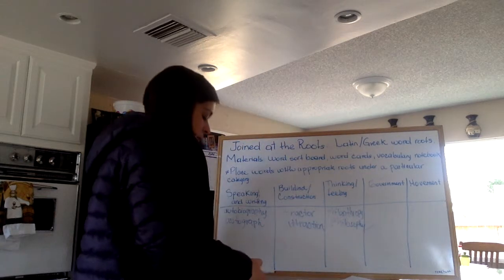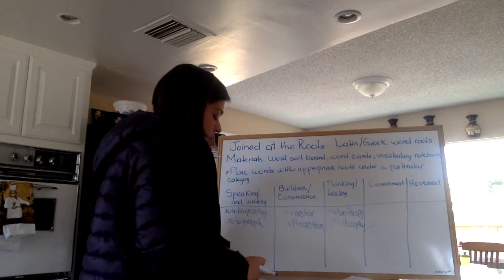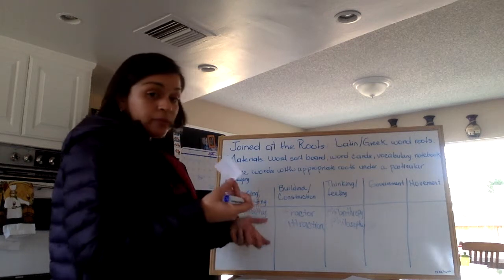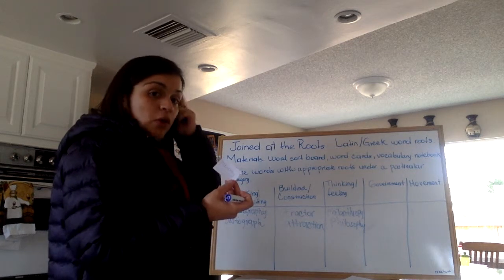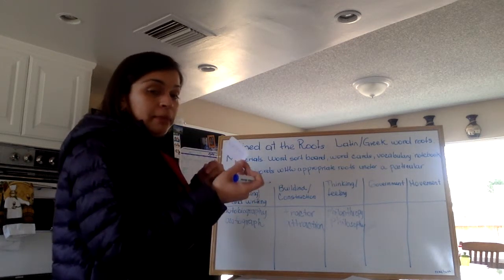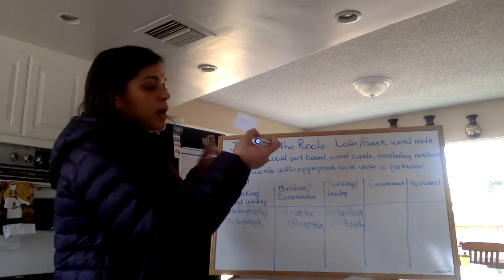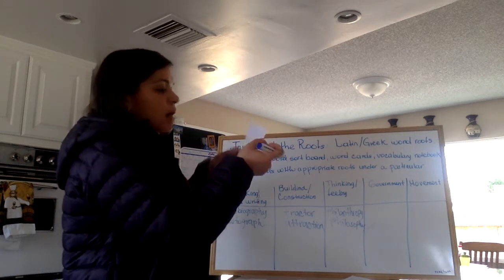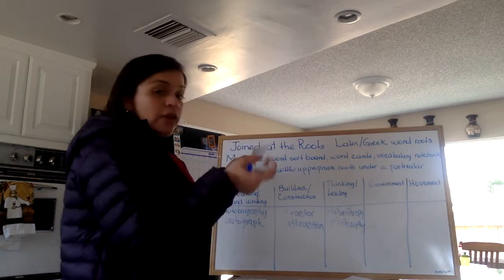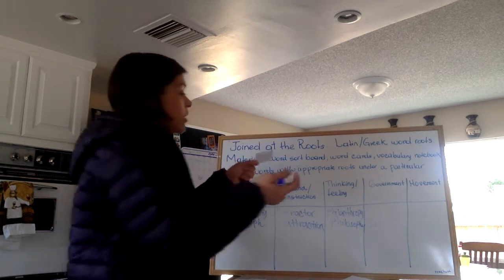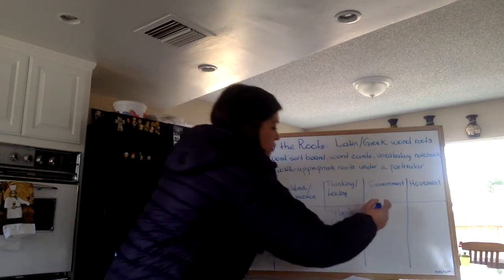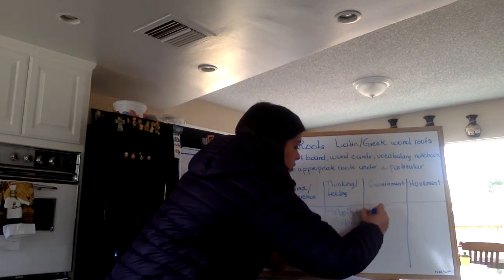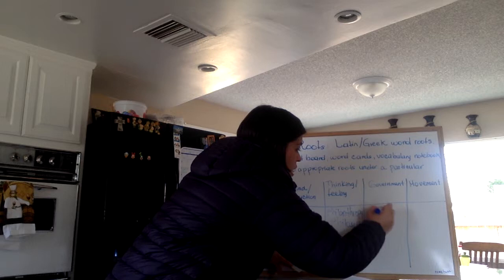Another word provided in the appendix of the book is 'economy' — that's a fairly easy one. It can perfectly go under the category of government.